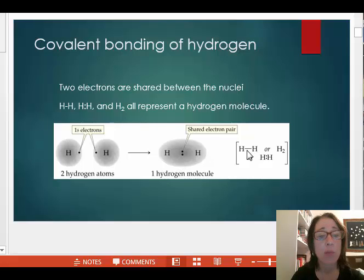This bond can be represented by a line drawn between the symbol of each atom, or capital H, simply writing the formula H subscript 2, or by placing two dots between the symbols for hydrogen.